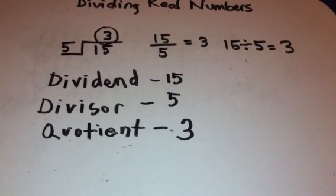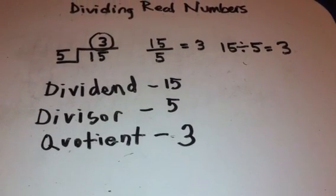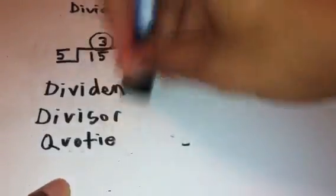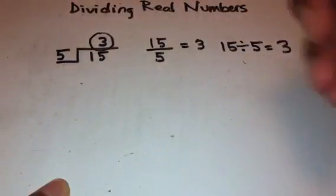So before we get into the rules for division, let's talk about what division actually is. When you're dividing real numbers, division is called an inverse operation. And what that means is that division is the inverse of multiplication.